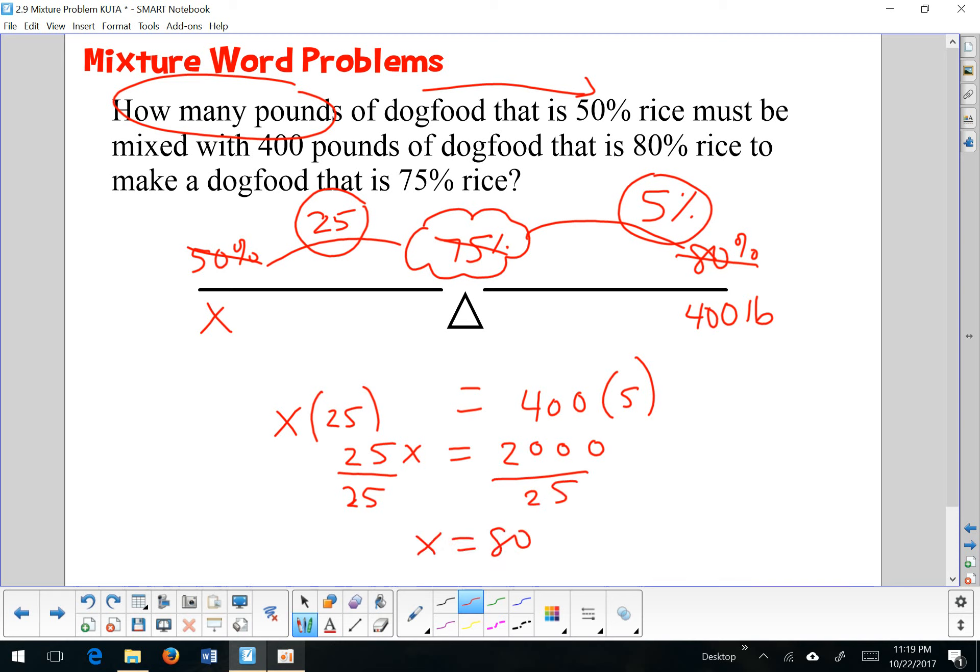So 25 on both sides, and x is equal to 80. Then we go back to find out what does x represent? It represents a quantity, so that's 80 pounds. So we need 80 pounds of the 50% rice mixture in order to create a 75% rice mixture. Let's take a look at another example.